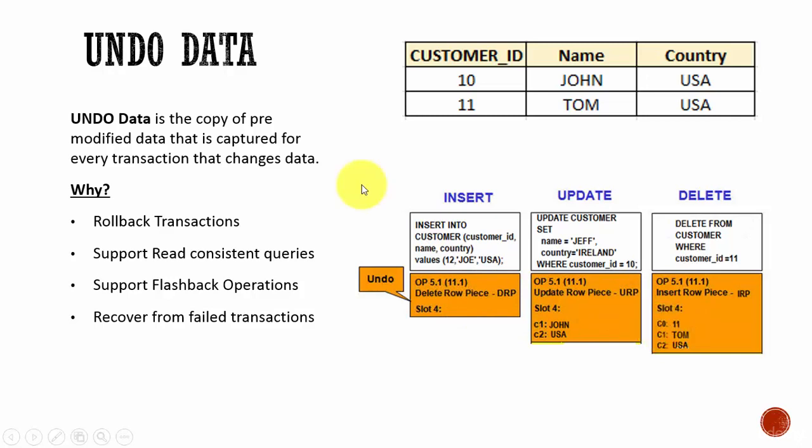You might be thinking — why does it need to store this Undo data? The reasons are: whenever you want to roll back a transaction, you need this Undo data. Also, to support read-consistent queries, we need Undo data. Read consistency will be explained in the next session.